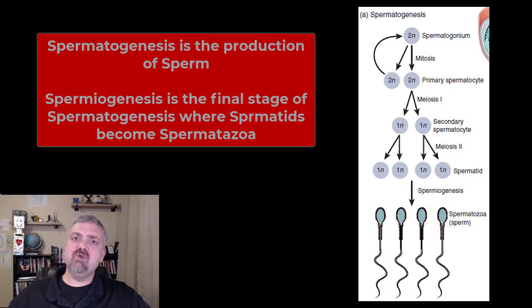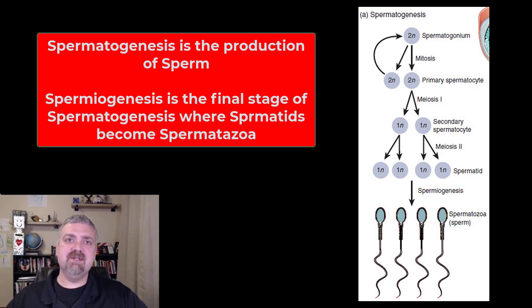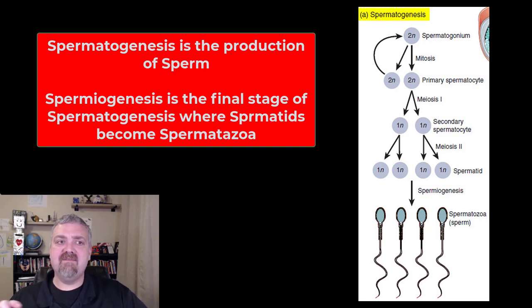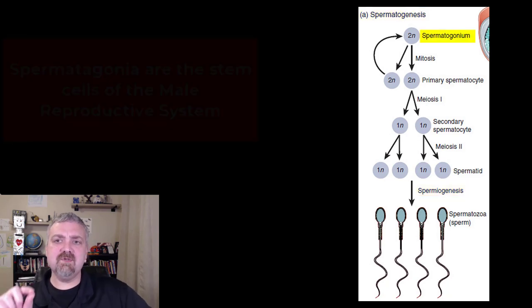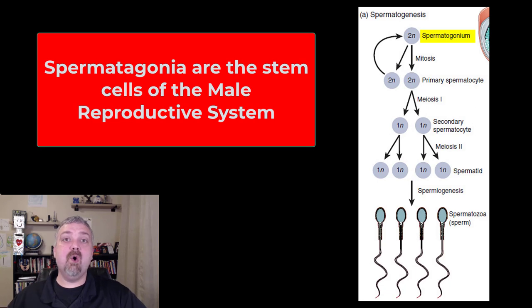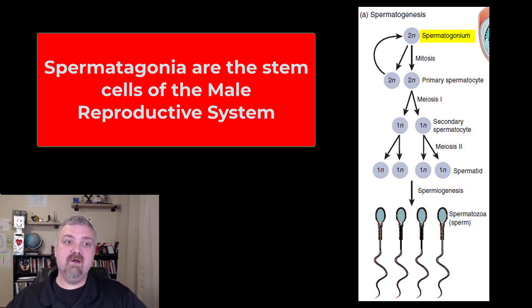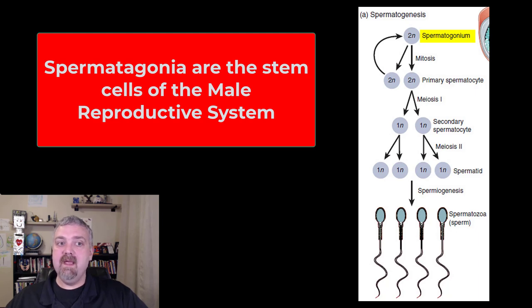Now let's look at the actual production of sperm. You're going to see a couple of words here that students get confused by. At the top we have spermatogenesis, and then near the bottom we have spermiogenesis — those are two different terms. Spermatogenesis starts with the spermatogonium, which is the term for the male stem cell that becomes the sperm.